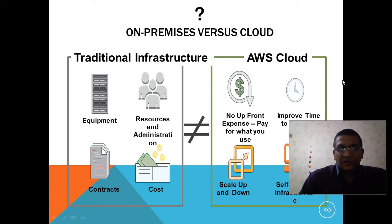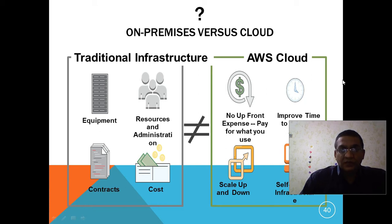When we talk about the on-premises approach, the entire infrastructure is installed locally on the company premises. This includes all the computers, servers, and every other required software and hardware that need to be purchased and installed within the premises of the company. There are several fixed costs, also known as capital expenses, associated with traditional infrastructure. These include facilities, hardware, licenses, and the cost of maintaining the staff.